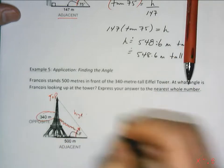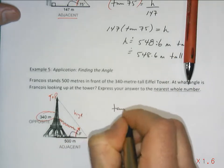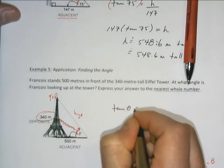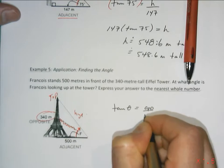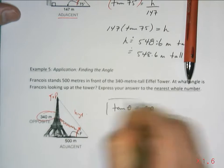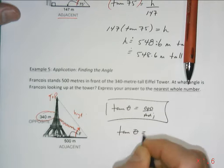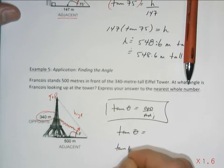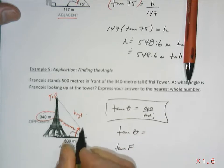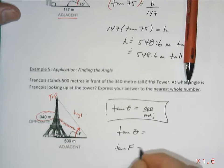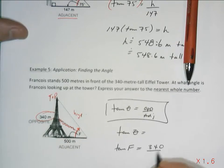So the formula is tangent of any angle is equal to opposite over adjacent. We put in tangent of the angle of whatever Francois is looking up. We could also call that F. If we're taking that to be angle F, that's fine. And we would have it as tan θ = 340 over 500.